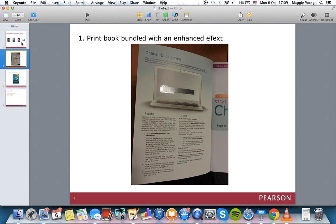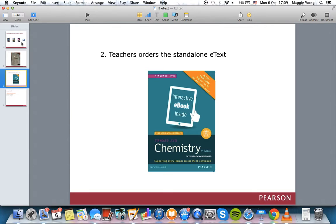Option 1 is a printed book bundled with an enhanced e-text. This is the book with the inside front cover and the access code. Option 2 is a standalone enhanced e-text. Here is the printed card with the code inside.